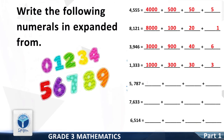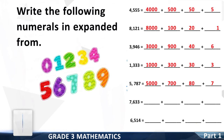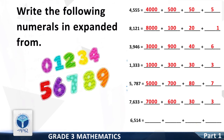Let's move to the next question: 5,787. First expanded form: 5,000. Next: 700. Next: 80. Next: 7. Now move to the next number: 7,633. First expanded form: 7,000. Next: 600. Next: 30. Next: 3.